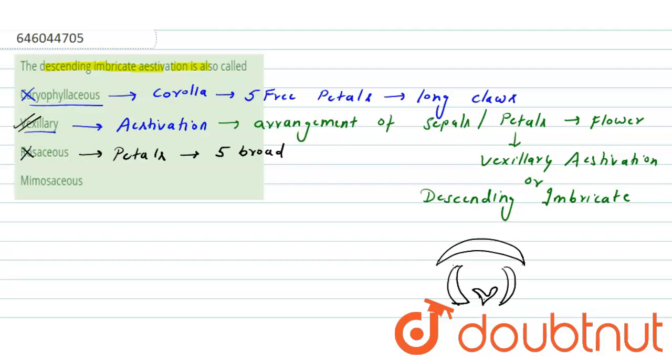And the last option is mimosaceous. Mimosaceous relates to the Mimosa family, which is the subfamily of Leguminosae. So this is also incorrect. So the correct answer will be here, option number two.